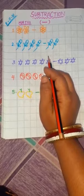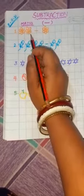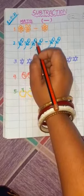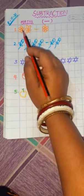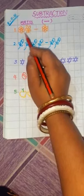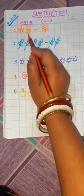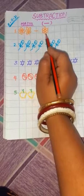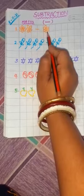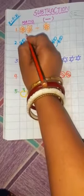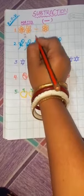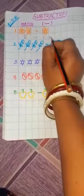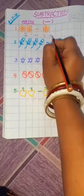Look at here children. Number one, children, what are these? These are flowers. Let us count them children. One, two. How many flowers here? Two flowers. Two flowers minus, how many flowers here children? One flower. Two flowers minus one flower is equal to, how many flowers children?